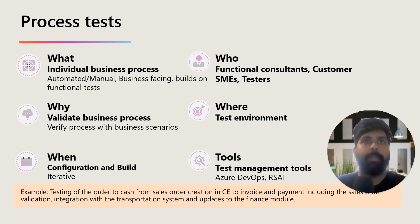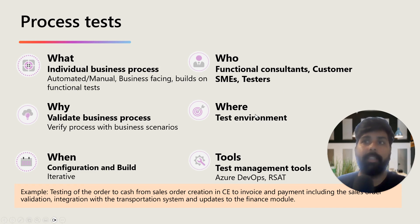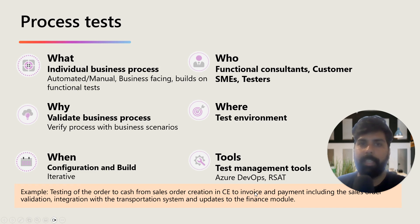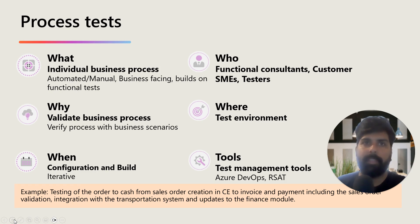The next test type is the process test. What is done: individual business processes are tested, either automated or manual. Who: functional consultant. The key difference from functional testing is that in functional test you are validating the requirement, whereas in process test you are validating the business process. Where: done in the test environment, not dev. When: configuration and build phase. Example: testing the order-to-cash flow from sales order creation in CE to invoice and payment, including sales order validation, integration with the transportation system, and updates to the finance module.